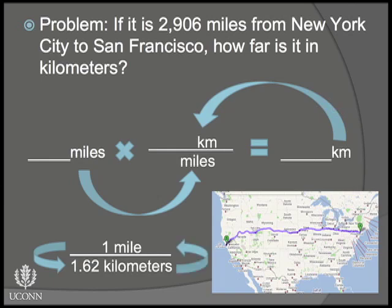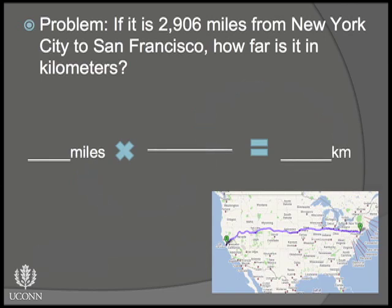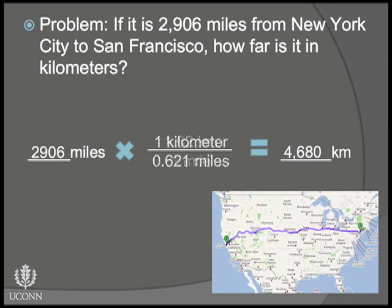This is how our conversion factor will look for this problem. We can go back to our starting and ending units, plug in our beginning value, and add our conversion factor, then solve for our end value. Something else to recognize is that we could have used different numbers in our conversion factor, and as long as the ratio between them is still the same, the end value will also be the same.